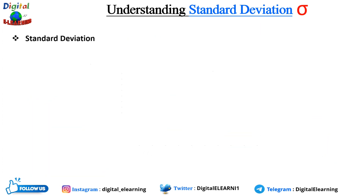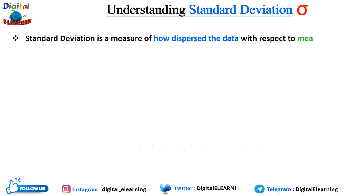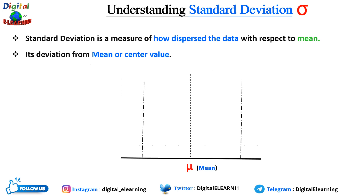Standard deviation is a measure of how spread the data is with respect to the mean. In short, it is a deviation from the mean or the center value. Let's understand this using a graph. For any set of data, you can easily calculate the mean and the standard deviation.